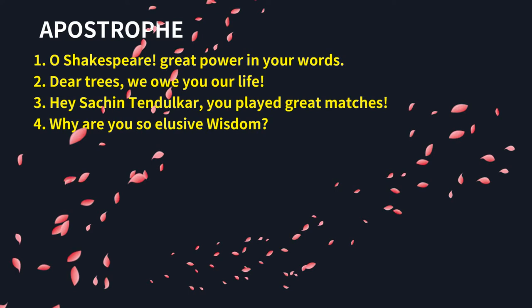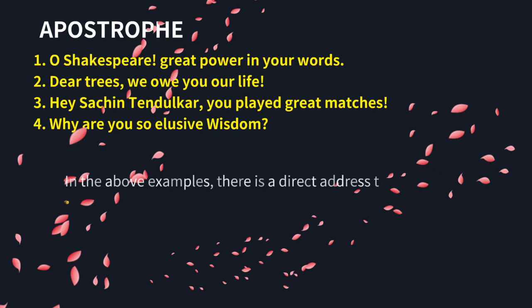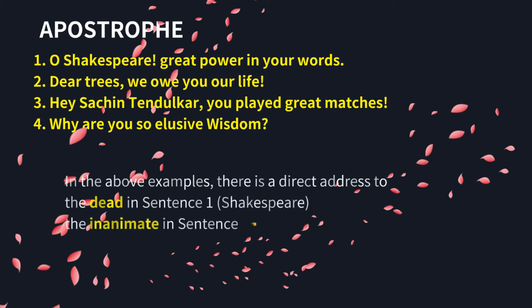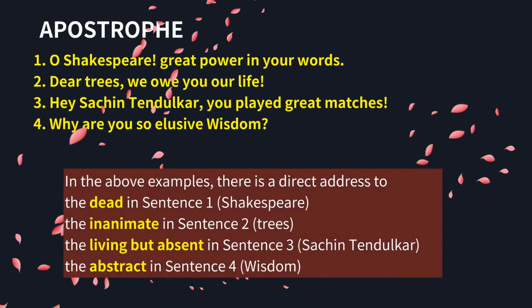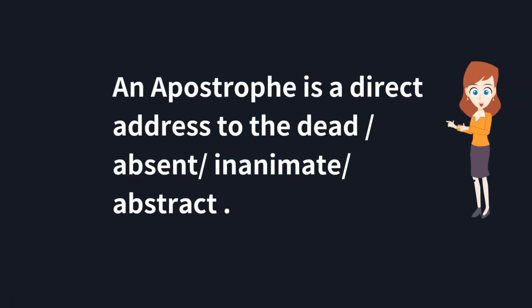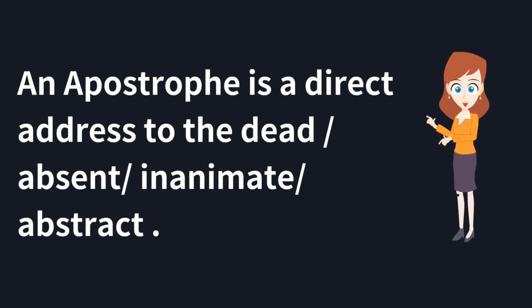Similarly, the fourth sentence is a direct address to Wisdom, which is an abstract notion, so this is also an apostrophe. To sum it up, apostrophe is a direct address to either the dead, an inanimate object, a living person who is absent, or to an abstract notion. An apostrophe is a direct address to the dead, absent, inanimate, or abstract ideas or entities.